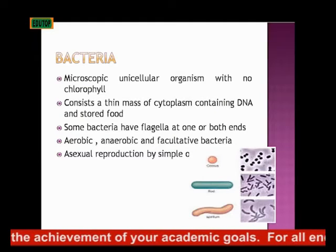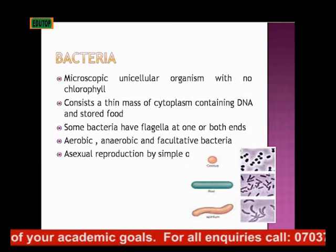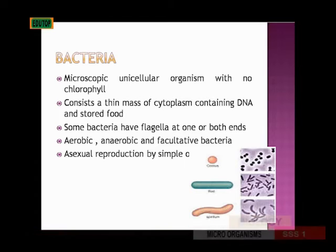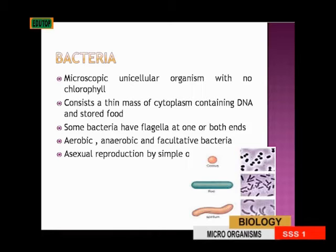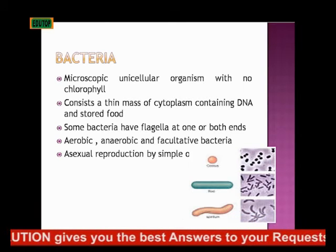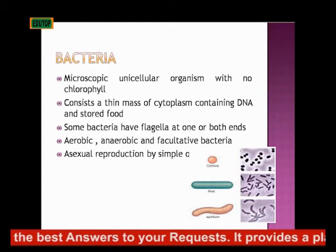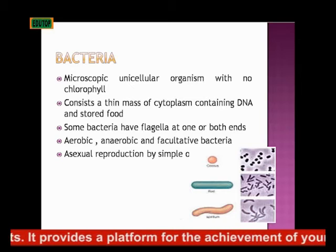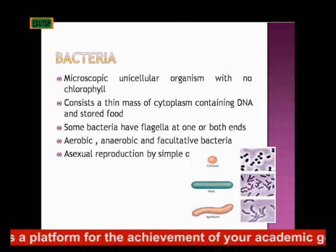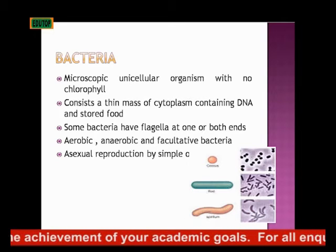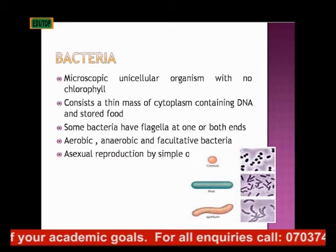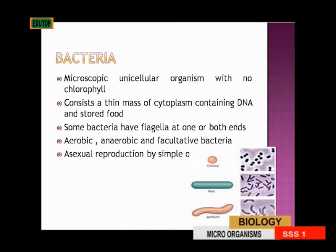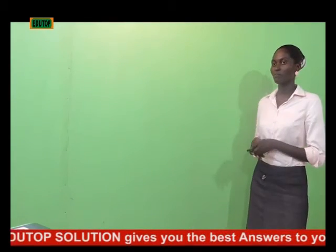Bacteria is a microscopic unicellular organism. There is no chlorophyll in bacteria. Bacteria consists of a thin mass of cytoplasm containing DNA and stored food. Some bacteria have flagella at one end while others have their flagella at both ends. Flagella is majorly for movement. Bacteria are aerobic, anaerobic and facultative — that is, some use oxygen while others do not use oxygen in their respiration. Bacteria undergo asexual reproduction by binary fission.